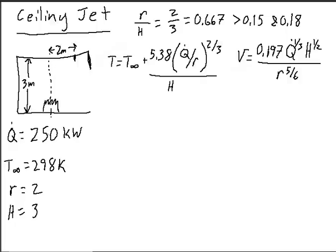And if we have a fire that's say 250 kilowatts in size, an ambient gas temperature of 298 Kelvin, and we want to know the temperature and velocity at a point that is 2 meters from the center line